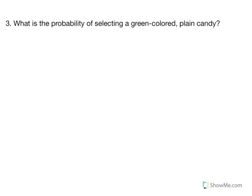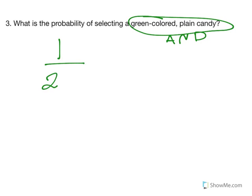Number three. What is the probability of selecting a green colored plain candy? All right. Now, the way this is worded, green colored plain candy, this is implying and. We want green colored and plain. Okay? No problem. So if I look on my table, I have one green colored plain candy, and there's no condition. I just want green colored plain. So it's out of all of them. So just one out of 24, which is 0.042.